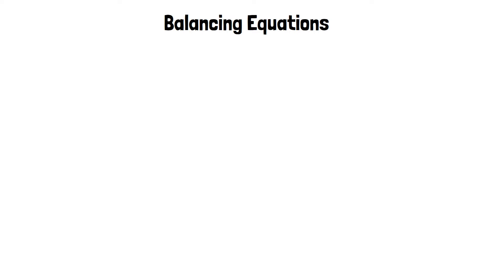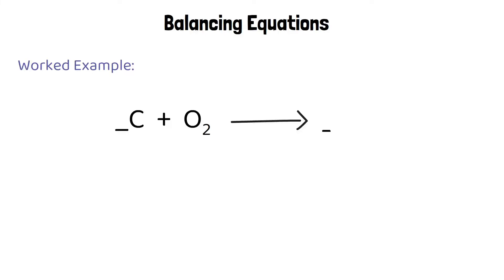Sometimes you'll be given an equation which has all the correct formulas in but is not balanced. This equation has spaces before some of the chemicals for you to write numbers to show how many molecules of each substance you would have. If we start by counting the oxygens on either side, there are two oxygen atoms in the reactants but there's only one in the products. To fix this, I can put the number two in front of the carbon monoxide.